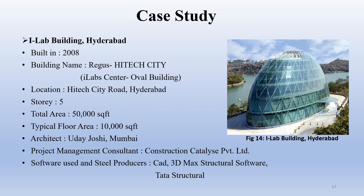Let's see the case studies on the diagrid structural system. The first diagrid structure in India is the iLab building in Hyderabad, built in 2008. The building is called the iLab Center Oval Building, as it is oval in shape, located in Hi-Tech City, Hyderabad. It is a five-story building with a total area of 50,000 square feet and a typical floor area of 10,000 square feet. The architect is Uday Joshi from Mumbai. The project management consultant is Construction Catalyst Private Limited. Software used includes CAD and 3D Max structural software, and steel was produced by Tata Steel.